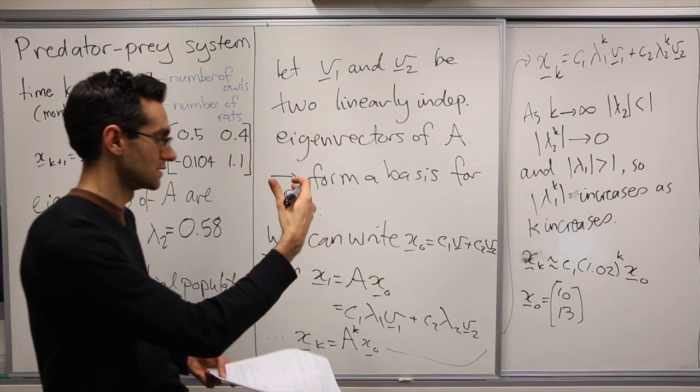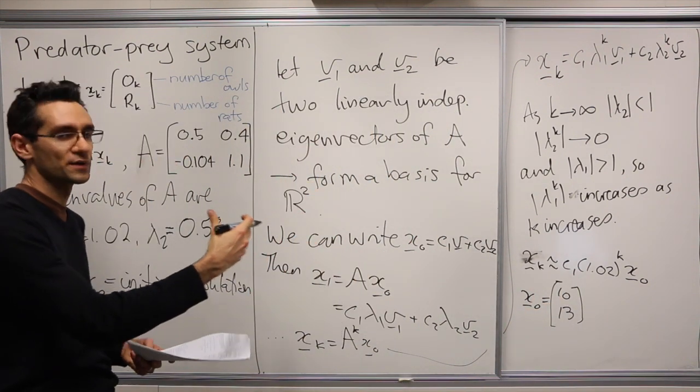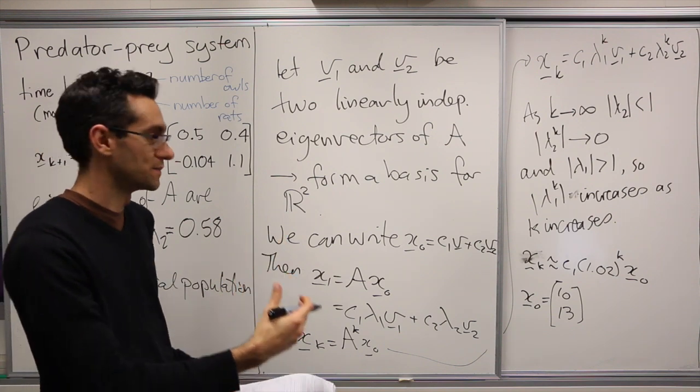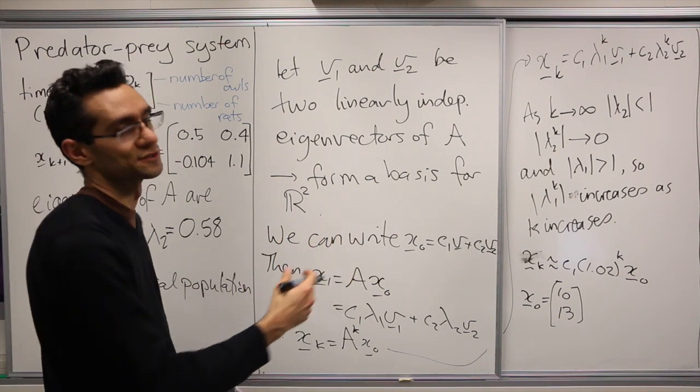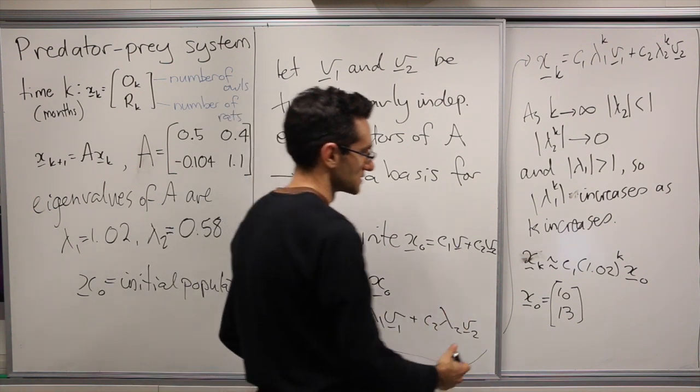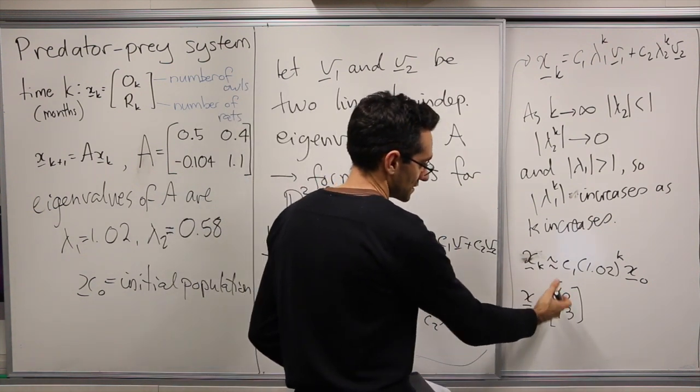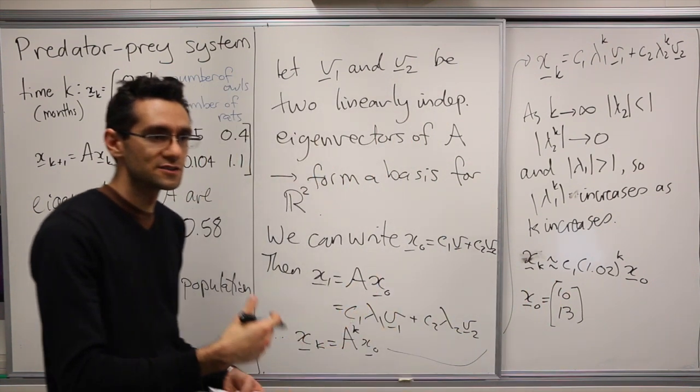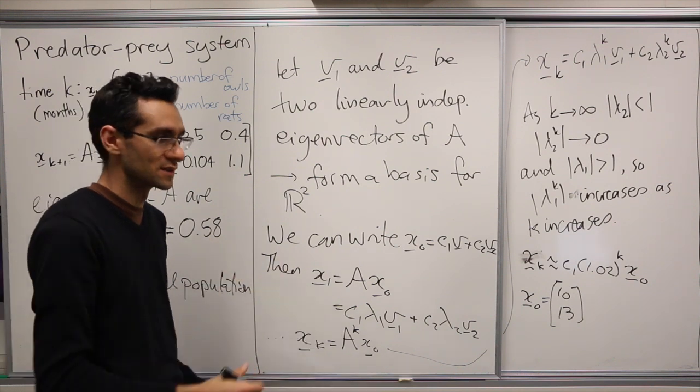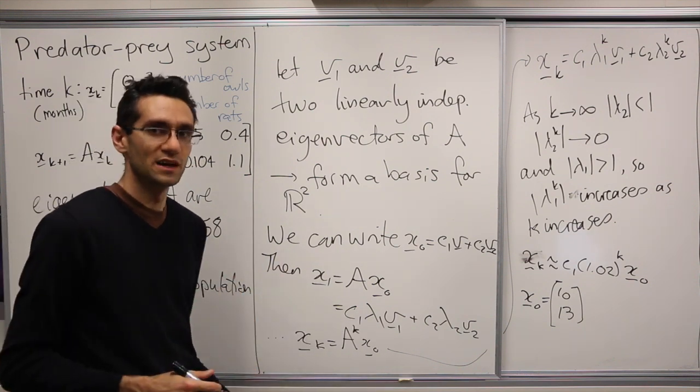So we have a slow growth of about 2% per month of both owls and rats. And if we started with these particular proportions, then they continue in that proportion stably. And so this is the long-term behavior of this system.